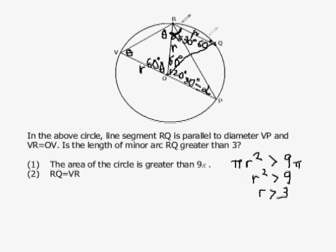So if the radius is greater than 3, they're asking us for the length of the minor arc RQ. Because we know that the shortest distance between any two points is a straight line, I know that the length of RQ is greater than 3, which is the radius. So number 1 is sufficient on its own.